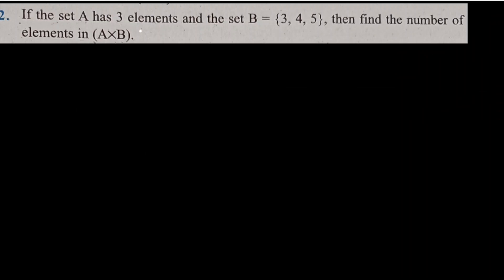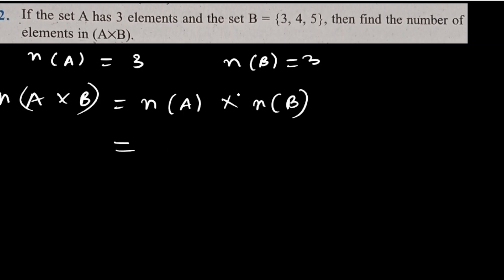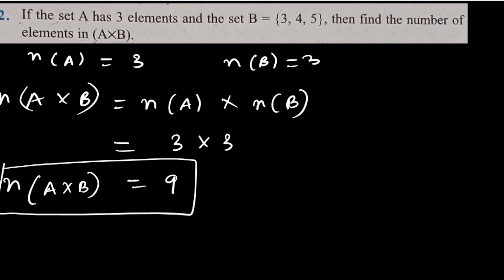Next question says: if set A has 3 elements and set B = {1, 2, 3}, find the number of elements in A cross B. Number of elements in B is also 3. The number of elements in A cross B is the product of number of elements of A and B, which is 3 × 3 = 9. So number of elements in A cross B equals 9.